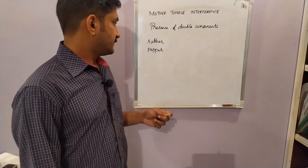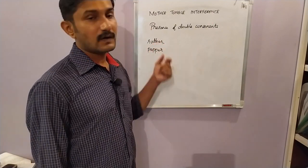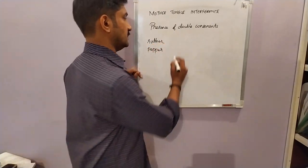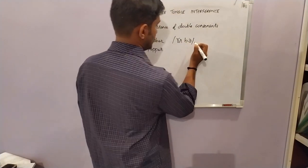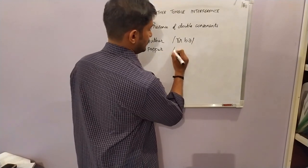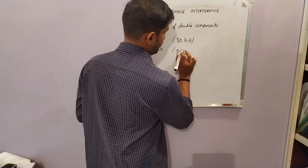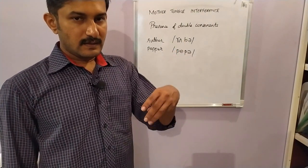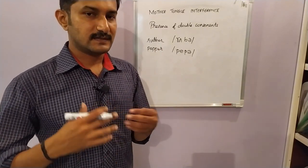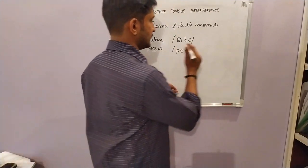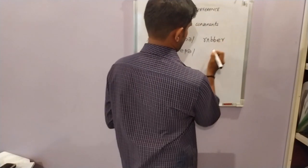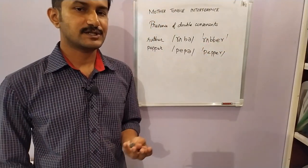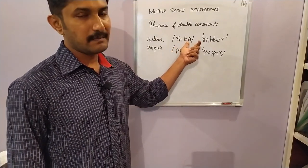Regarding the presence of double consonants: in spelling, certain consonants may occur as pairs, but in pronunciation there is no such doubling. So 'r-u-b-b-e-r' is pronounced as 'rubber', and 'p-e-p-p-e-r' is pronounced as 'pepper'. In our mother tongue there is a provision for doubling of consonants, so we have a tendency to pronounce them as 'rubber' and 'pepper'. There is no doubling happening in English pronunciation — it is 'rubber' and 'pepper'.